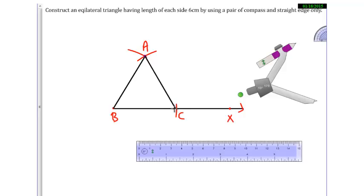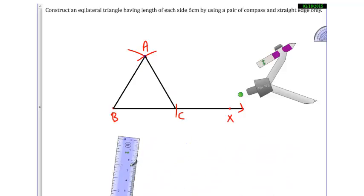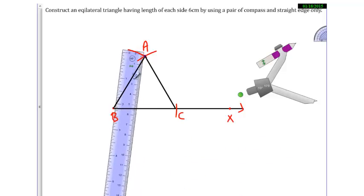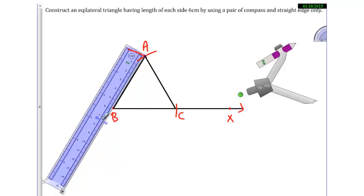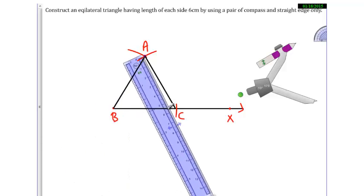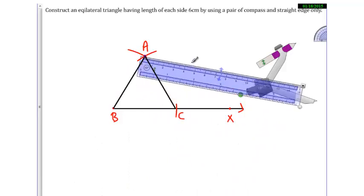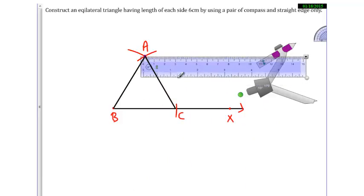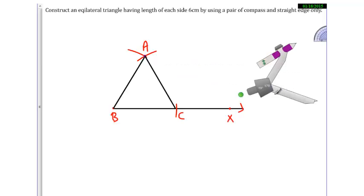And now my triangle ABC is an equilateral triangle. If you measure it, all sides will be of 6 centimeters only. Let's measure AB whether it is 6 or not. So you can see it's 6, and BC we drew 6.